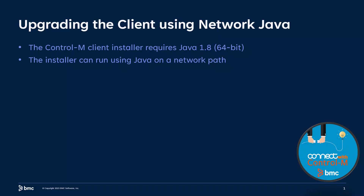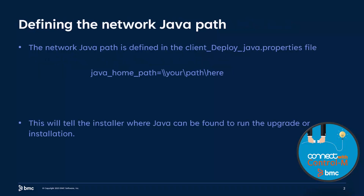To perform an installation or upgrade of the Control-M client, a 64-bit Java 1.8 is required. Fortunately, the installer can run Java on a network path. To define the network path that Java is located on, we'll need to edit the client.deploy.java.properties file. This will tell the installer where Java can be found to run when it's time to upgrade or install a Control-M client.